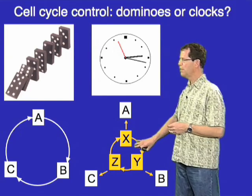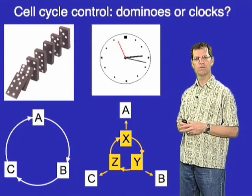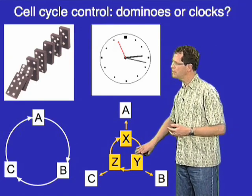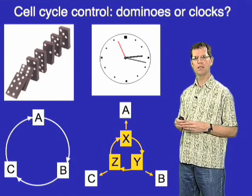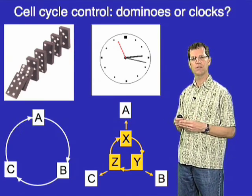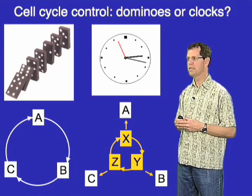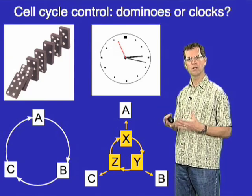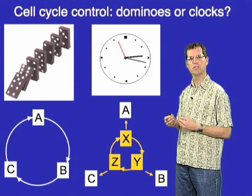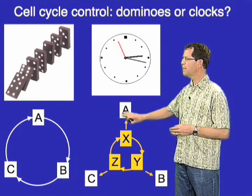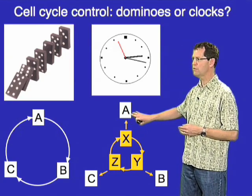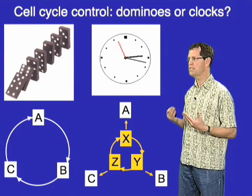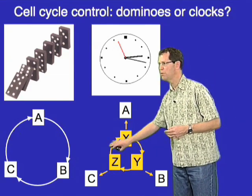The alternative view came from studies in early frog embryos, which clearly suggested that these early embryos contain an intrinsic biochemical timer that turns on cell cycle events at specific times and in a specific order. In other words, the order and timing of cell cycle events are determined by a programmed timer or clock that flips switches at specific times to initiate cell cycle events — independent of the events that it controls. In frog embryos, it's possible to block DNA replication or completely remove the nucleus and still see evidence that this timer is operating normally and oscillating.